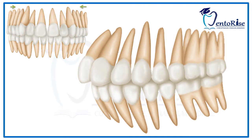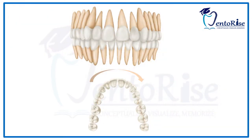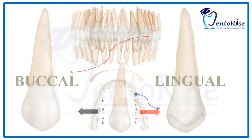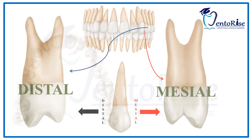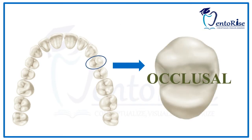According to the FDI tooth notation system, the right permanent maxillary first premolar is numbered as 1,4 and the left permanent maxillary first premolar is numbered as 2,4. The dental anatomy of the permanent maxillary first premolar can be studied under five headings: the buccal aspect, the lingual aspect, the mesial aspect, the distal aspect, and the occlusal aspect. In this video we will be focusing on the buccal and the lingual aspect; the remaining aspects will be discussed in subsequent videos.